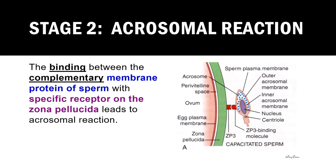The second stage of fertilization is the acrosomal reaction. This stage name highlights the importance of the acrosome. The acrosomal reaction begins with the binding between the complementary membrane protein of the sperm with the specific receptor on the zona pellucida of the secondary oocyte. These two molecules are complementary to each other, meaning their conformation is compatible with each other.